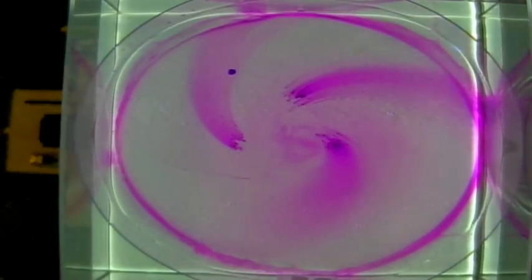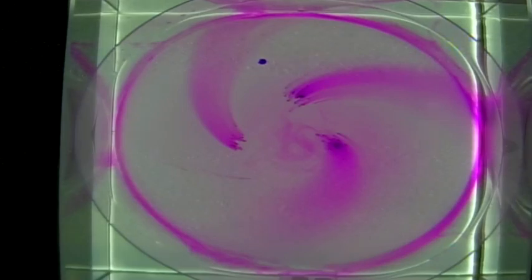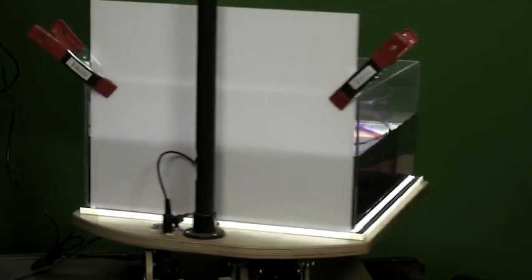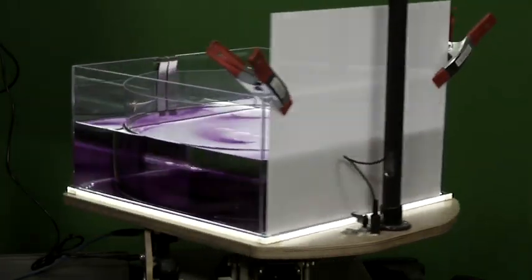Ekman layers occur both in Earth's atmosphere near the surface as well as in the top of the ocean, in terms of the layer that interacts with the surface winds blowing on the ocean circulation.